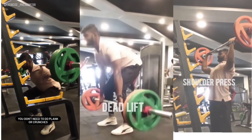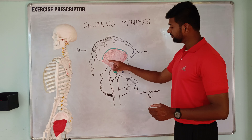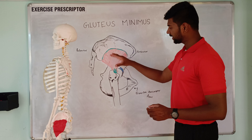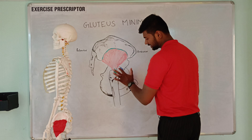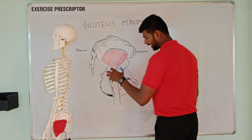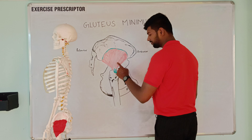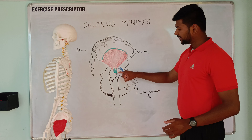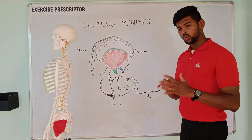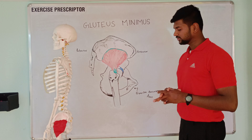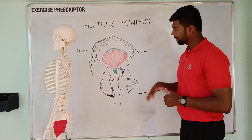Attachments of gluteus minimus: Proximally it attaches between the anterior and inferior gluteal line. Distally it attaches over the anterior aspect of the greater trochanter of the femur. The distal attachment of gluteus minimus is the more mobile attachment, so it is called the insertion.